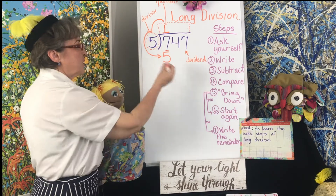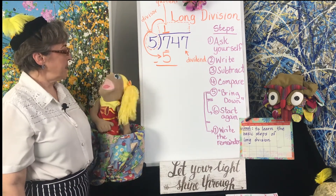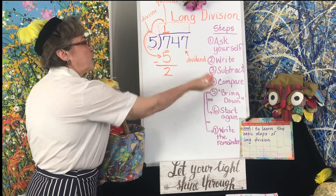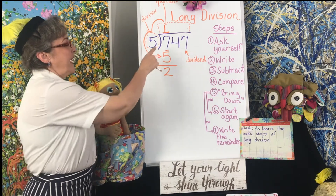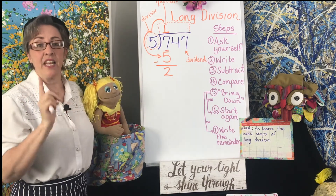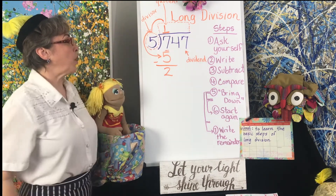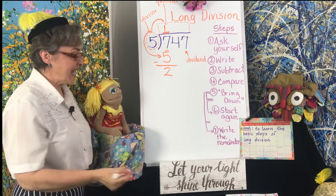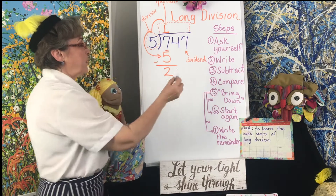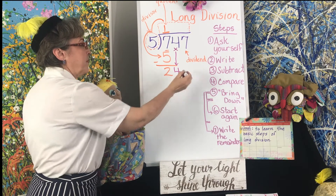Now we're going to do step 3: subtract. What is 7 minus 5? 2. So we put the 2 here. Now we're going to do what's called compare. We're going to compare this number with the 5 to make sure that it's less than 5. Because if it's more than 5, then this number was too small. We compare and it's less. The next step is bring down. So we're going to bring down this number and put it here. 24.